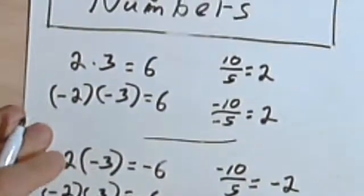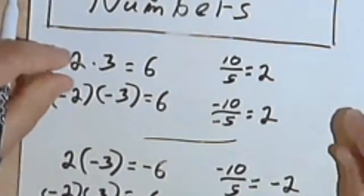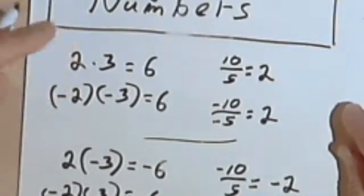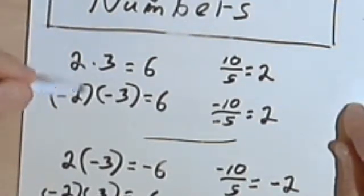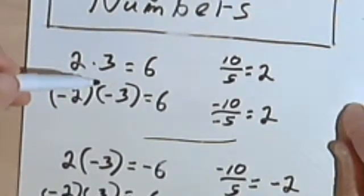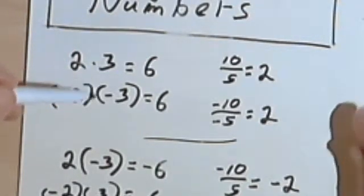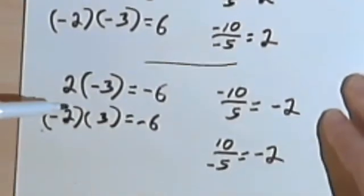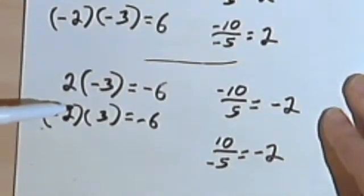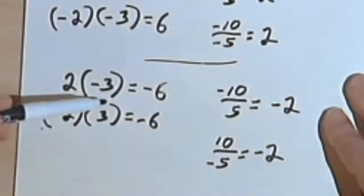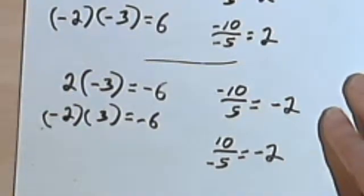So quickly once more: for multiplication and division, when the signs are the same, your answers are positive. When the signs are different, your answers are negative.